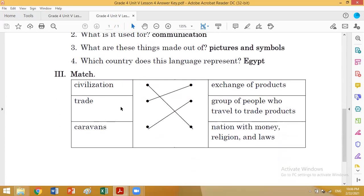Exercise three: Match. Civilization: nation with money, religion, and laws. Trade: exchange of goods or products. Caravans: group of people who travel to trade products.